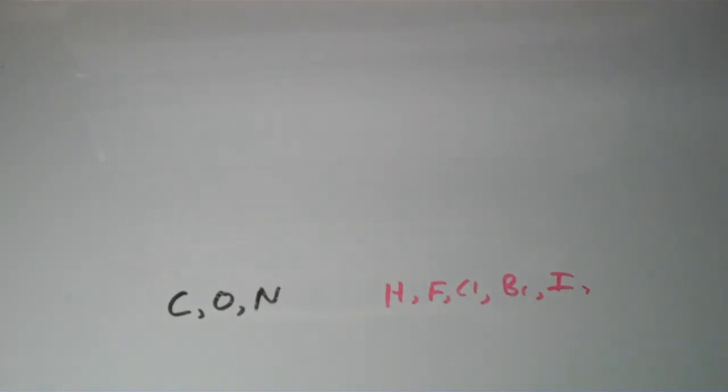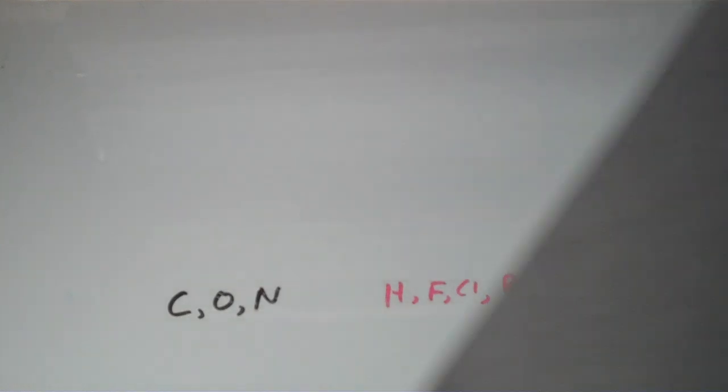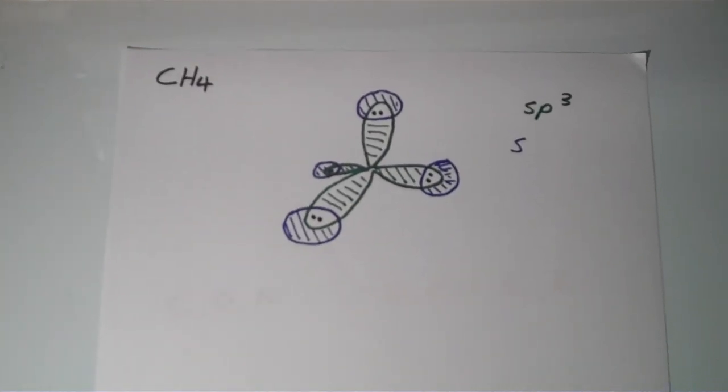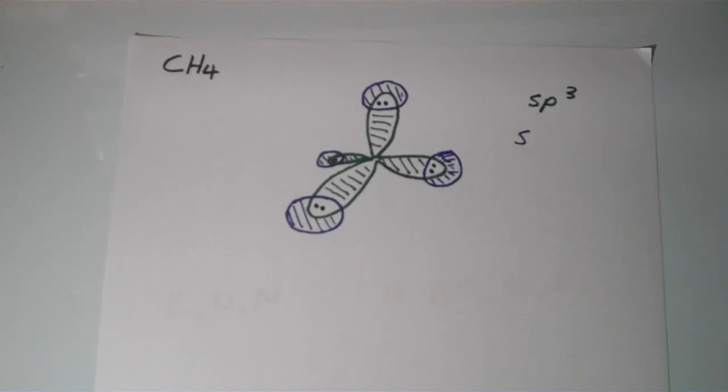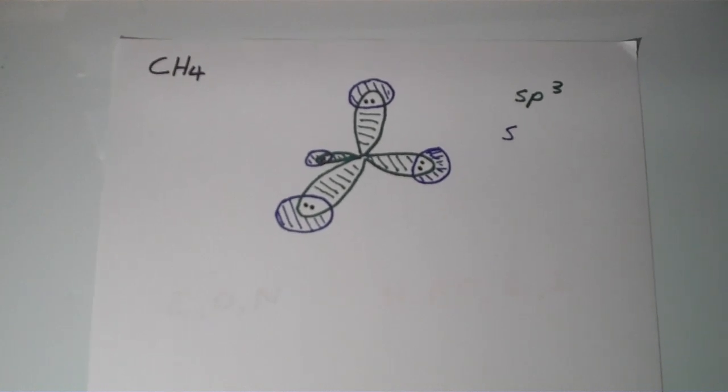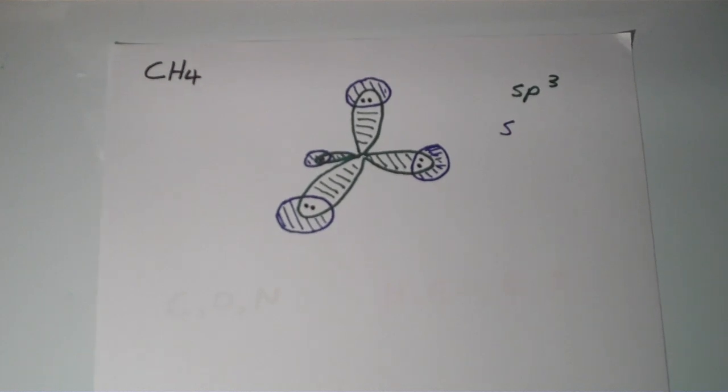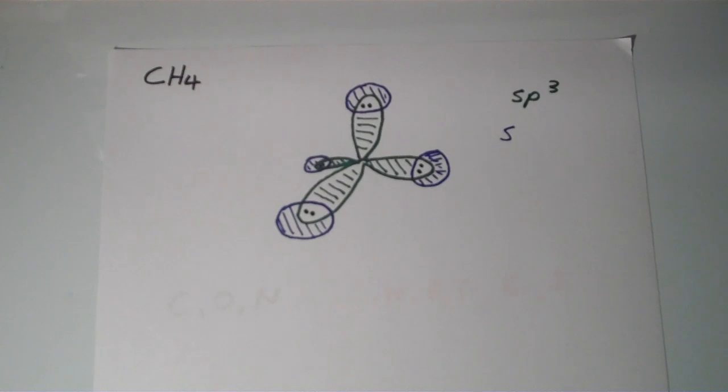In the videos that follow, I'm going to choose carbon as my central atom. And the reason why is because carbon hybridizes a lot and carbon tends to assume many different types of hybridization. So it's easy to use carbon as an example of the various types of hybridization.